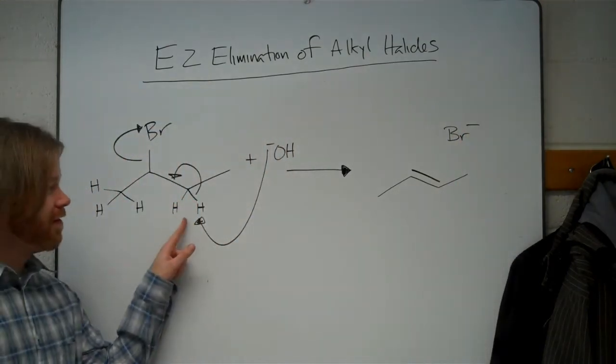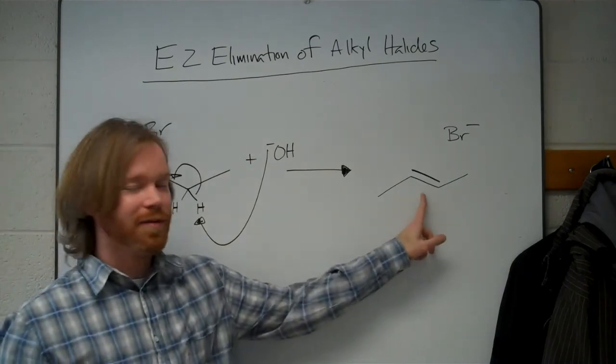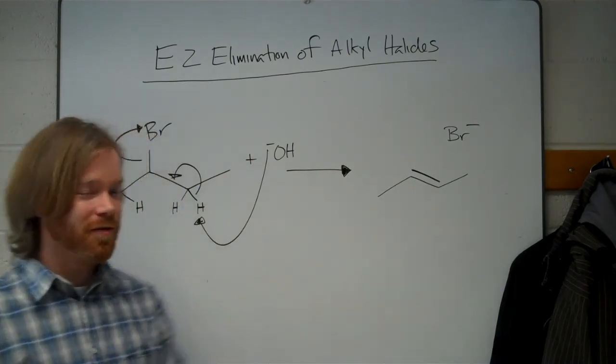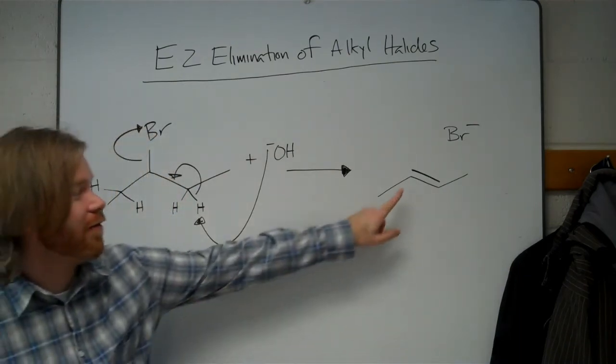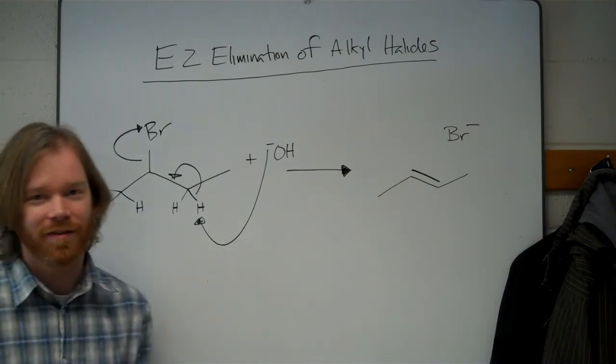If we remove from this side here, this carbon, then we get a more substituted alkene, which is always favored than the other, where we put the double bond here. So removal from this side is less favored.